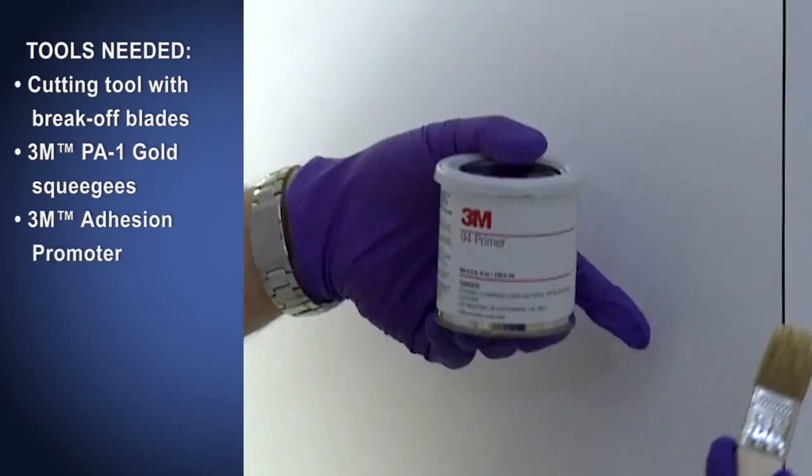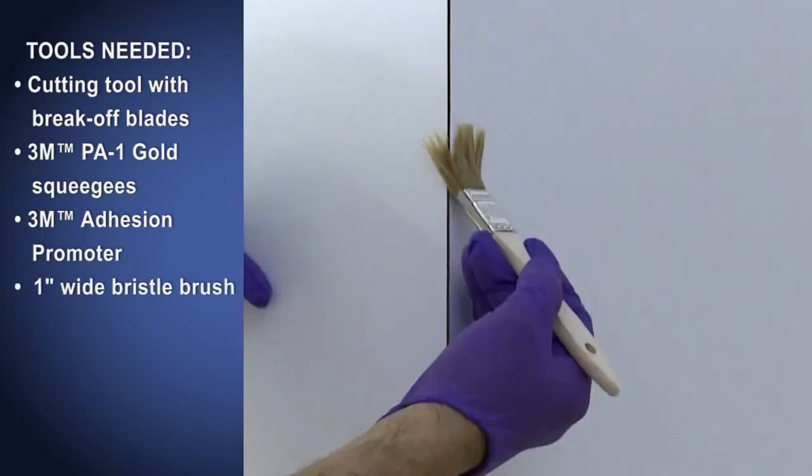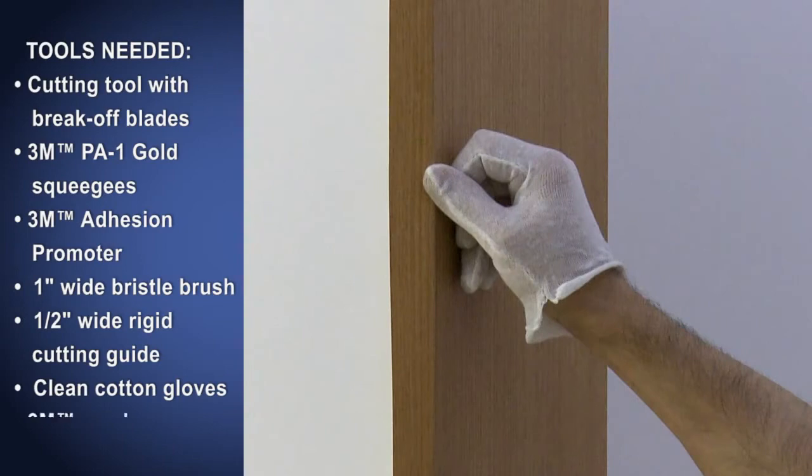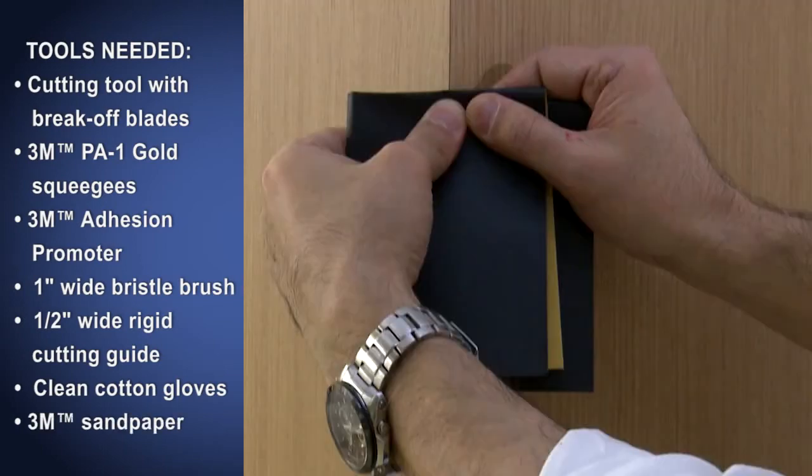3M brand adhesion promoter. 3M's Primer 94 is a solvent-based product. A 1-inch wide bristle paint brush. A 1 1/2 inch wide rigid cutting guide. Some clean cotton gloves. And 3M brand sandpaper.